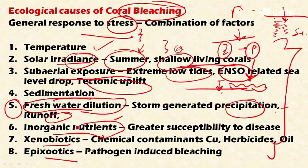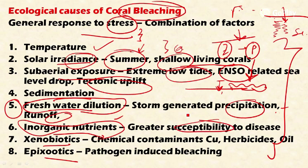The sixth reason is inorganic nutrients. Inorganic nutrients like ammonia and nitrate increase the susceptibility of both the coral polyps and the zooxanthellae to diseases, thereby causing destruction of the zooxanthellae.